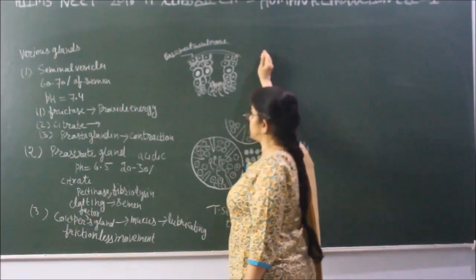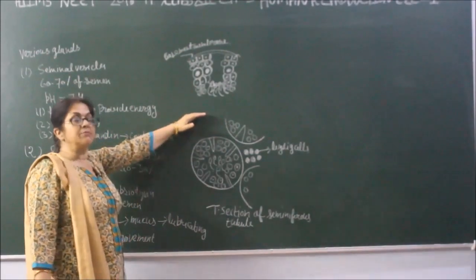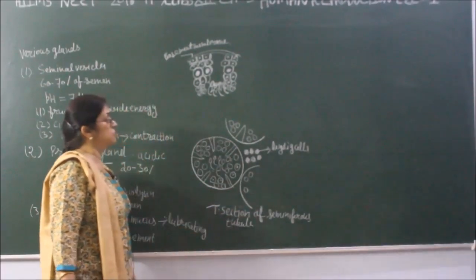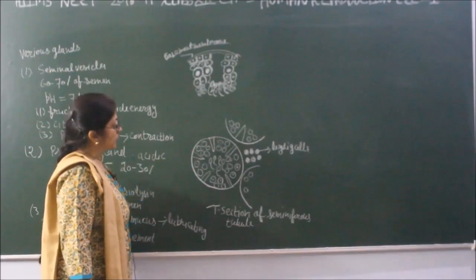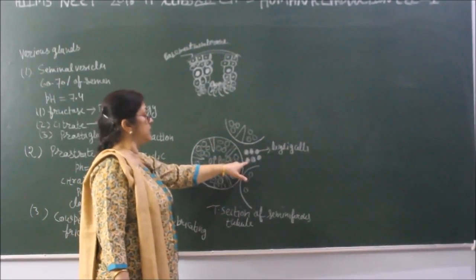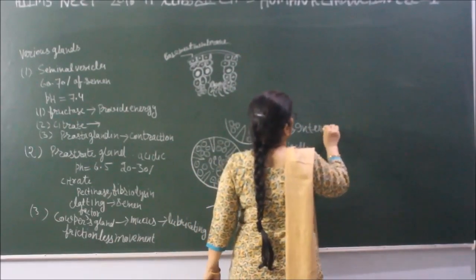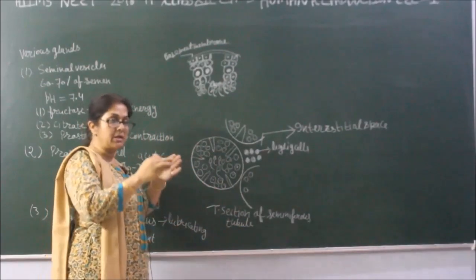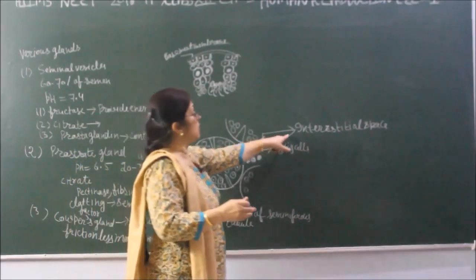If we cut the testes transversely, as we know, the testes have compartments called lobules. Each lobule contains 1 to 3 seminiferous tubules. The space between two seminiferous tubules is called the interstitial space, also known as the interstitial phase.